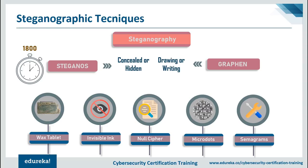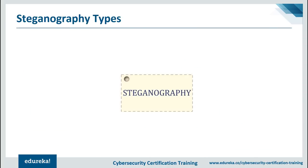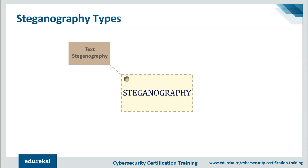Steganography is an ancient practice. The majority of today's steganographic systems use multimedia objects like image, audio, and video as cover media — the place where you actually store your hidden information. Based on the type of cover media, steganography is divided into multiple types. Text steganography is hiding information inside text files, involving changing the format of existing text, changing words within a text, generating random character sequences, or using context-free grammar to generate readable text. Popular methods include format-based method, random and statistical generation, and linguistic method.